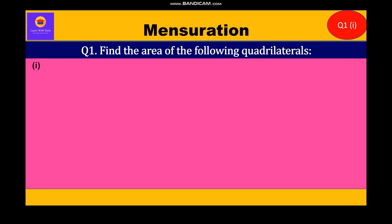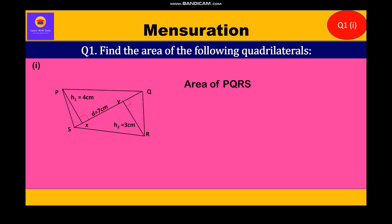We are given a general quadrilateral PQRS and we have to find its area. The area of PQRS is equal to half into diagonal in bracket H1 plus H2, which gives us half into 7 in bracket 4 plus 3, that is half into 7 into 7, which is equal to 24.5 centimeter square.